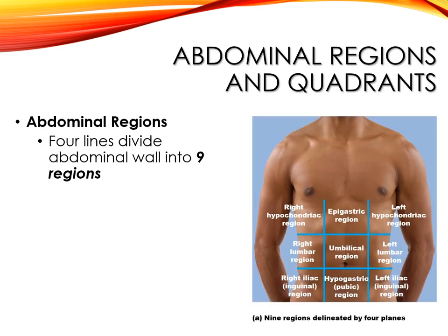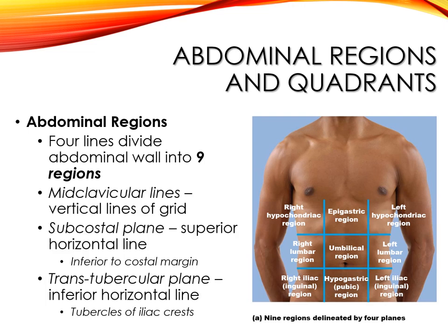At the beginning of the course we divided the abdomen into four general areas: right upper, right lower, left upper, left lower. Now we're going to get into more detail by drawing four lines that divide the abdomen into nine different regions. Essentially, if we draw a line down from the mid-clavicle region that gives us two vertical lines, and then two horizontal lines — one just under the thoracic region and one at the wings of the ilium. Just be able to recognize the organs that live in these regions.